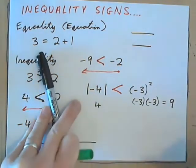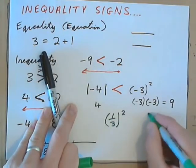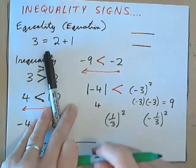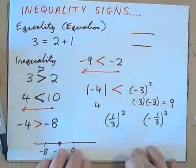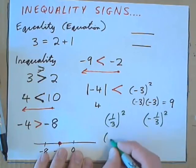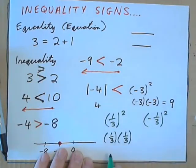What if we had 1 third in parentheses squared and negative 1 third in parentheses squared? Now, how would you put your inequality sign? First, calculate the left and right quantities. 1 third squared is 1 third multiplied by 1 third. When we multiply fractions, we multiply the tops. 1 times 1 is 1. Then we multiply the bottoms. 3 times 3 is 9.